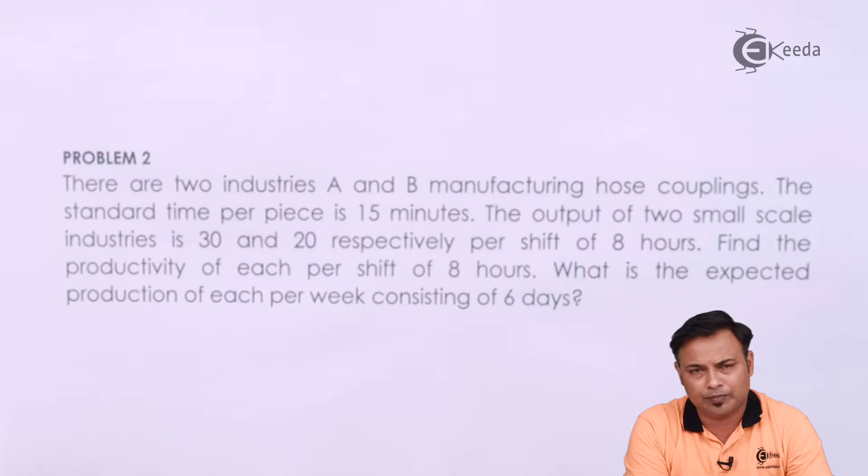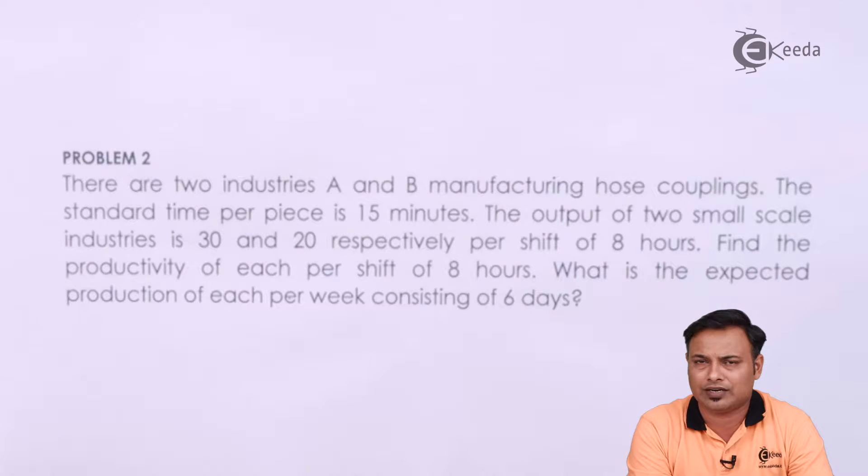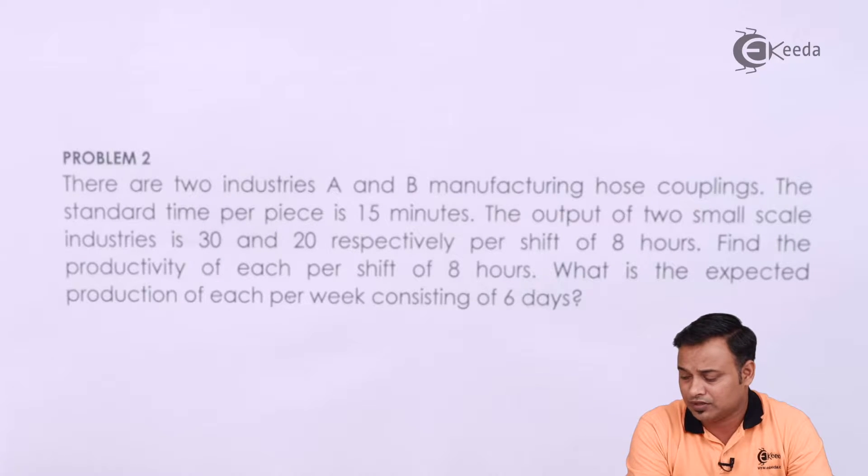The standard time per piece is 15 minutes. So the standard time or the normal time taken for one unit of hose couplings is 15 minutes, and the output of the two small scale industries is 30 and 20 respectively per shift of 8 hours.